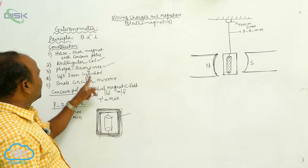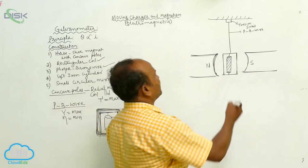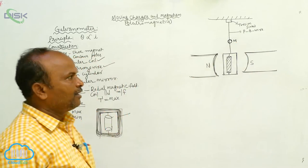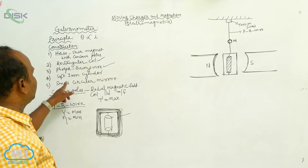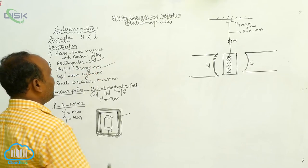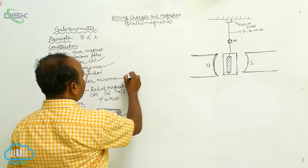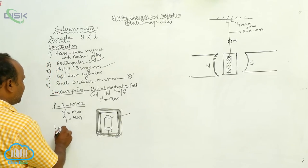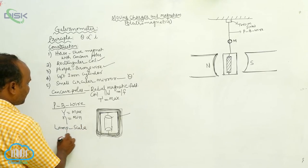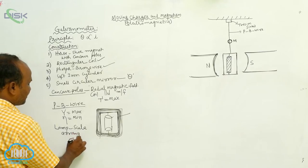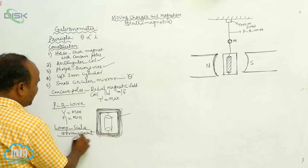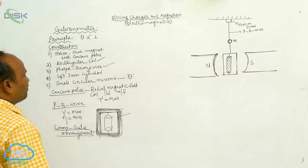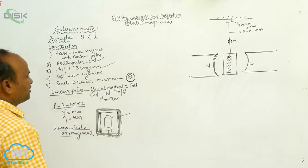Next, there is a small circular mirror. This small circular mirror is attached to the phosphor bronze wire in order to calculate the deflection in the coil. There is another arrangement called the lamp and scale arrangement. Using the lamp and scale arrangement along with the mirror, whatever the deflection occurs can be measured.